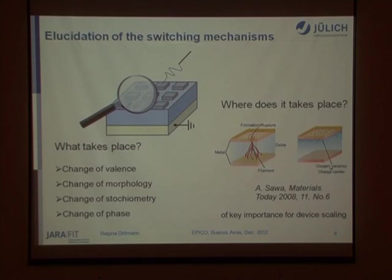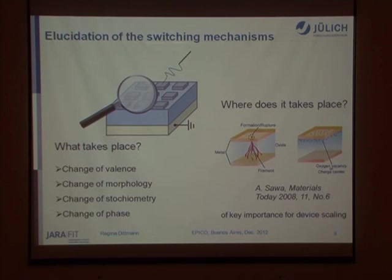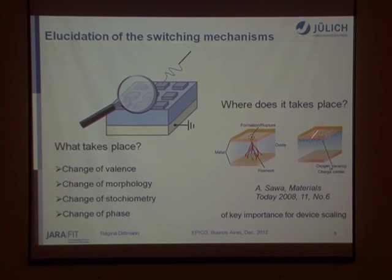So what we would like to do is: during switching, what takes place? We want to prove changes of the valence, changes of morphology, of the geometry, or even changes of phase during resistive switching. Another important question, which we already heard in the previous talk, is whether it is a local process — does the switching occur along a single filament, or is it a homogeneous process? As you can easily understand, this is of key importance for device scaling.